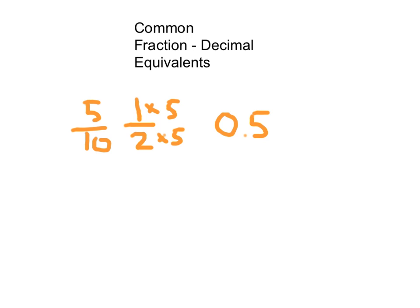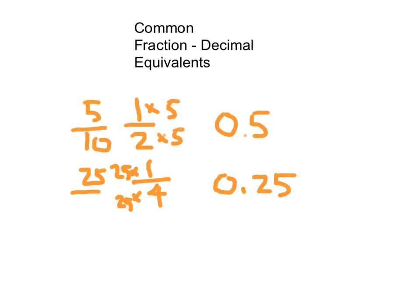Some other common fraction decimal equivalents: we have one fourth, or one quarter. In money form, I write it with the dollar sign and then 0.25, so that might be one way to remember that. To really show that that's true, we could have multiplied the numerator and denominator by 25 to get 25 hundredths.